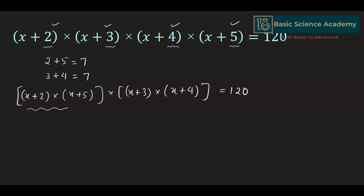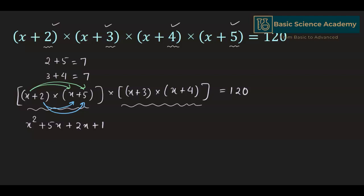Multiplying (x+2) and (x+5) gives us: x times x is x squared, plus x times 5 is 5x, plus 2 times x is 2x, and 2 times 5 is 10. So (x+2)(x+5) = x² + 7x + 10.